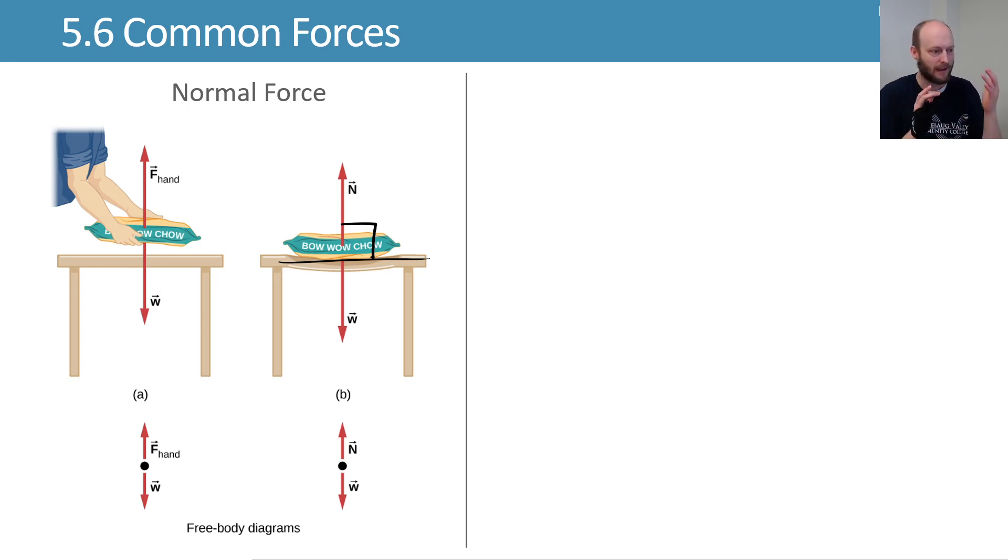Frequently, this will be up and down, but you can imagine if the surface were at an angle, you'd still have a normal force, but that would be still normal to the surface. So if your surface is at an angle, the normal force is still coming normal off that surface.